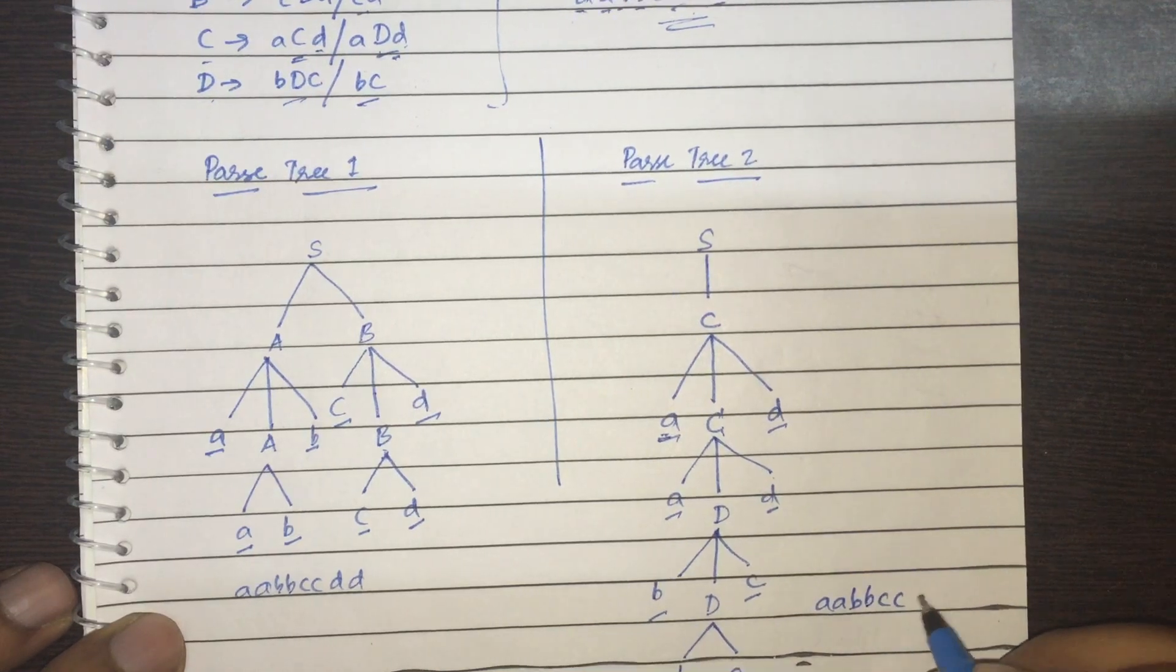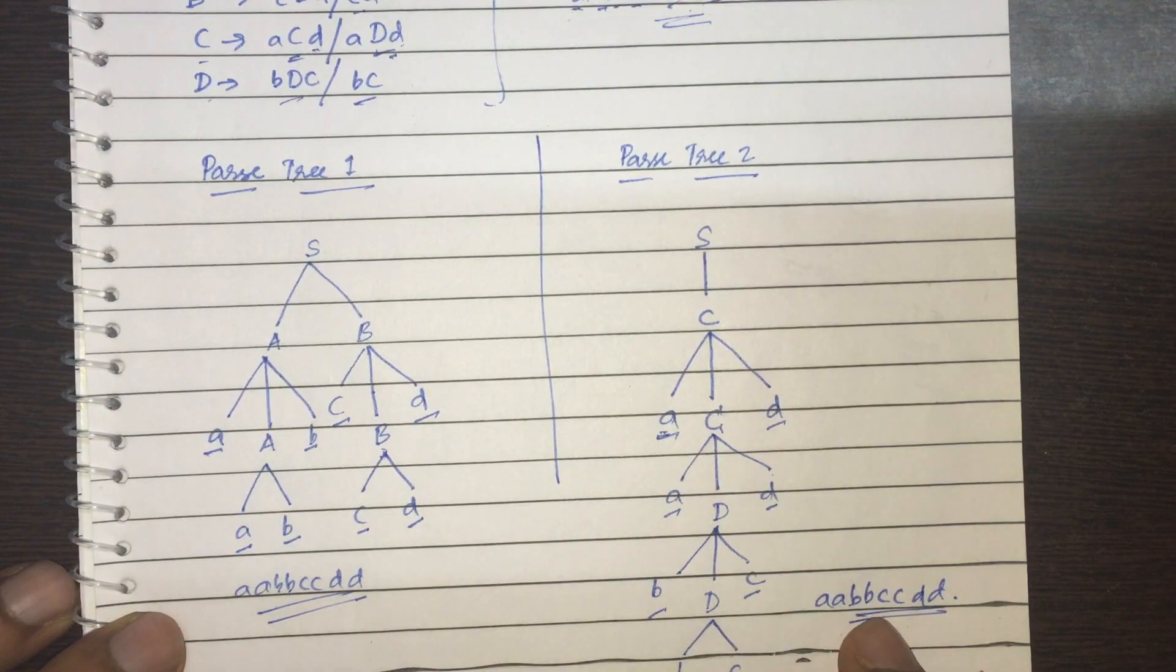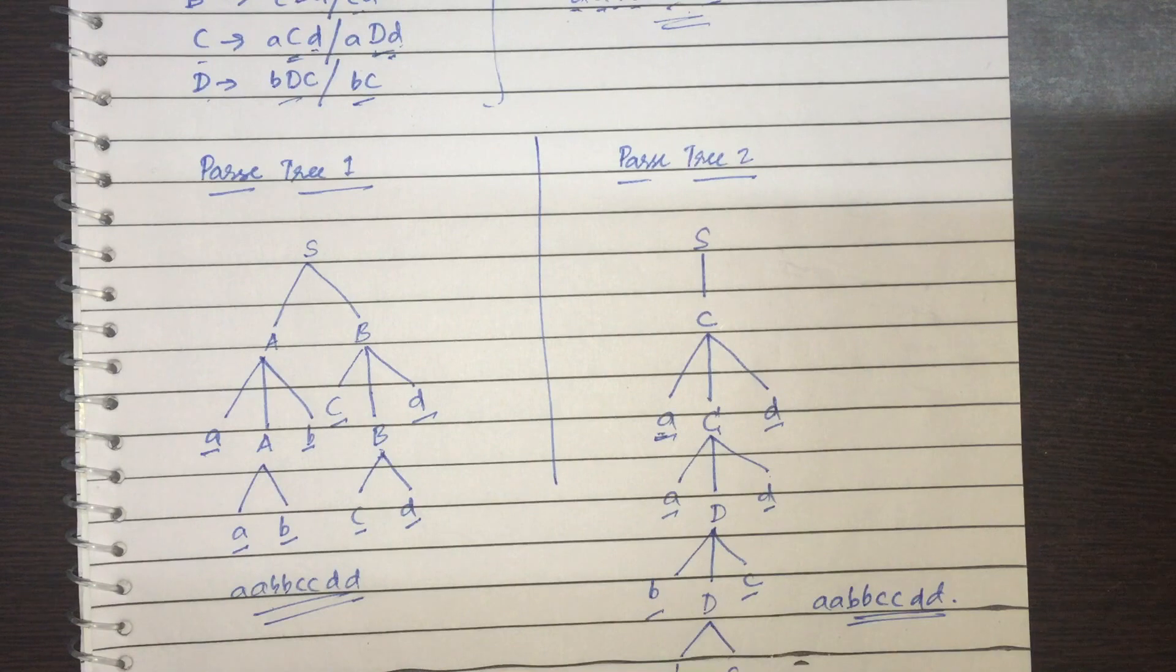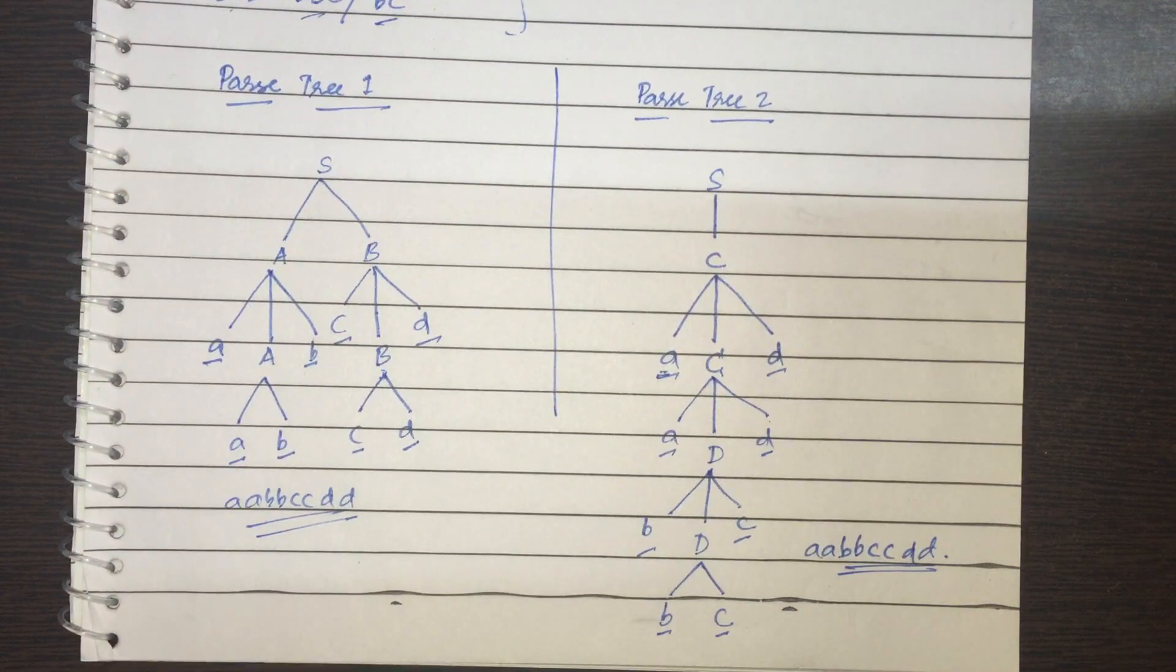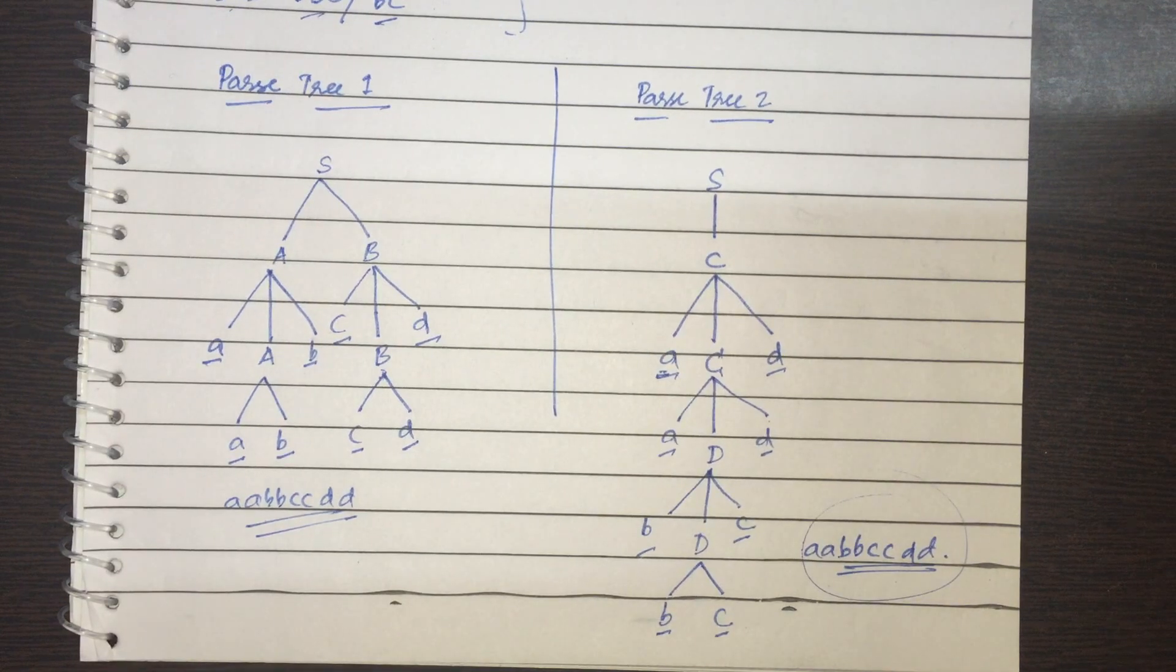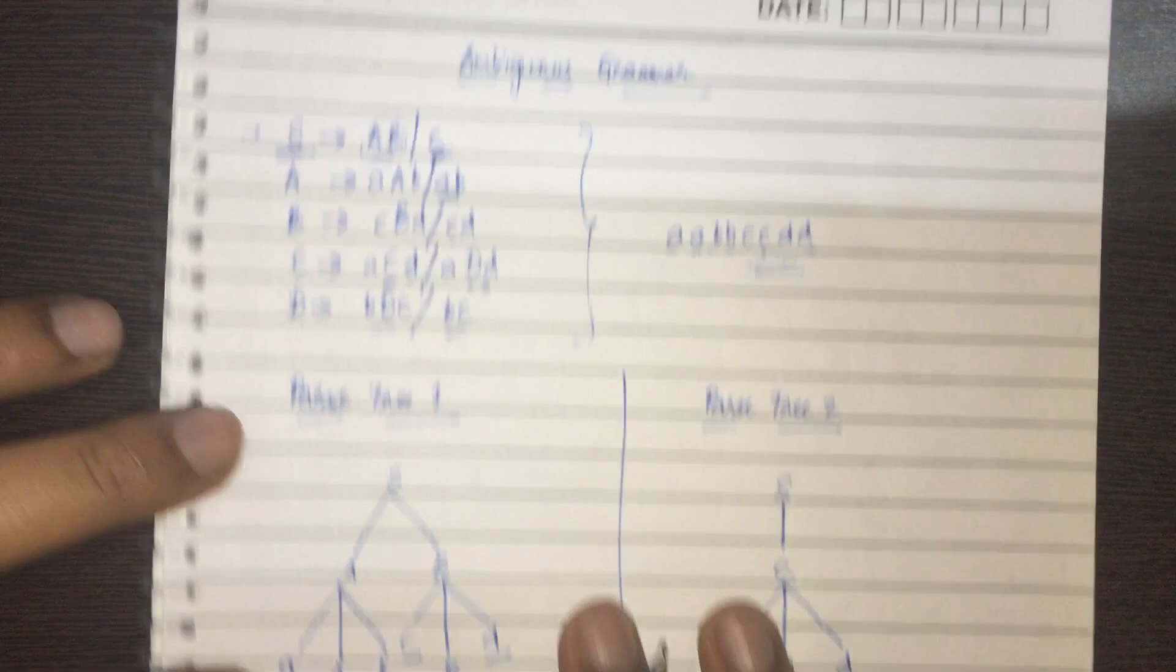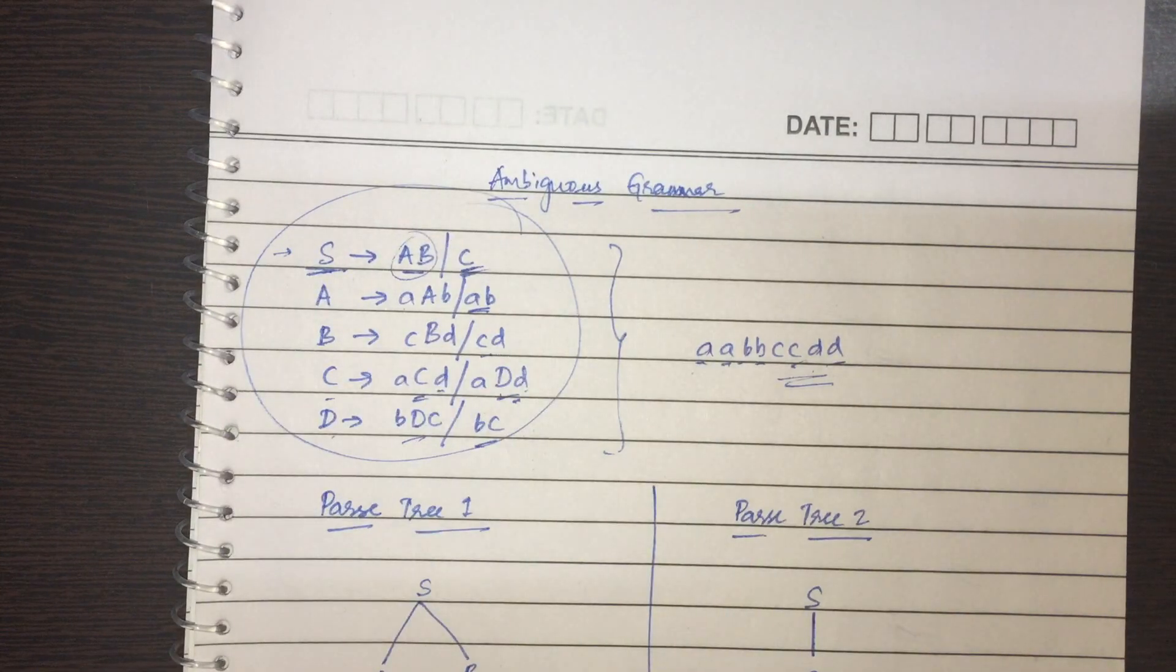B, B, C, C and D, D. So these two resulting strings have two parse trees. So we can say that the resulting string AA, B, B, C, C, D, D can be achieved using two parse trees and this particular grammar can be considered as an ambiguous grammar.